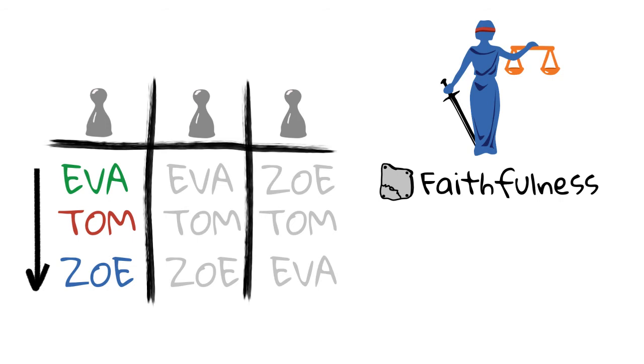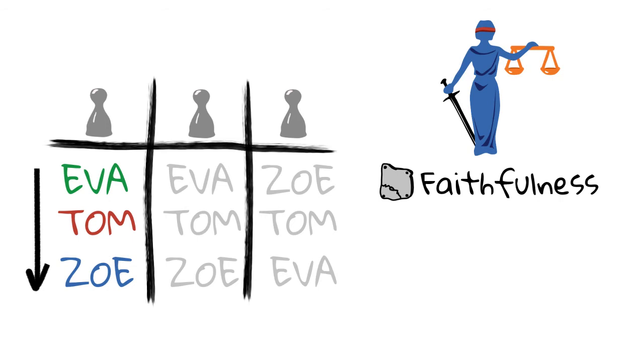First, consider only the preferences of the first voter. The so-called faithfulness axiom says, if there is one voter only, their preferred option should win. In this case, Eva should win.